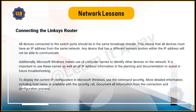When connecting the Linksys router, all devices connected to the switch ports should be in the same broadcast domain. This means that all devices must have an IP address from the same network. Any device that has a different network portion within the IP address will not be able to communicate. Additionally, Microsoft Windows makes use of computer names to identify other devices on the network. To display the current IP configuration in Microsoft Windows, use the command ipconfig. More detailed information, including host name, is available with ipconfig /all.